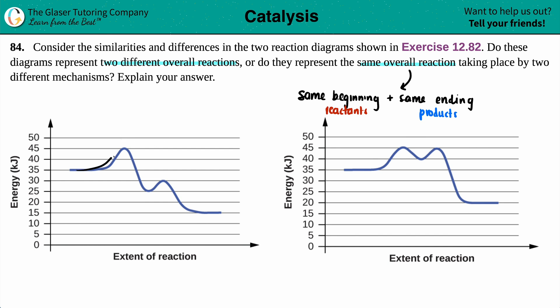Now, we always read these graphs from left to right. The starting horizontal is always going to be your reactants. So you got two horizontals. On the start, they are both reactants.